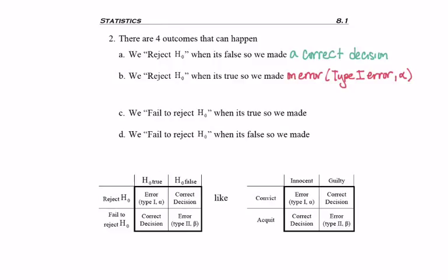So now instead, let's assume that we fail to reject H0 when it's true. So you don't tell me I was wrong, then we made a correct decision, right?